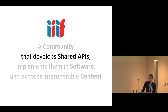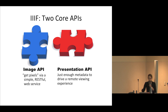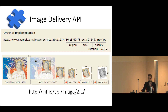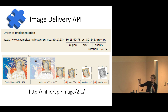The shared APIs of IIIF include two core APIs: the Image API, which allows for the transfer and manipulation of image pixels, and the Presentation API, which provides context and metadata around the image. With the Image API, you can take a clipping of an image, make it bigger or smaller, change the rotation, and manipulate the color — all through URL syntax.